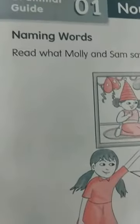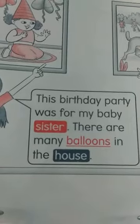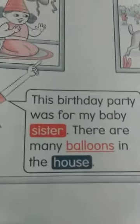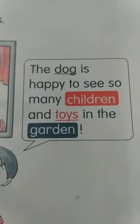Grammar Guide: Noun — Naming Words. Read what Molly and Sam say. Look at the coloured words. Molly says: 'This birthday party was for my baby sister. Many balloons in the house.' All the highlighted words are naming words — nouns. Sam says: 'The dog is happy to see so many children and toys in the garden.'